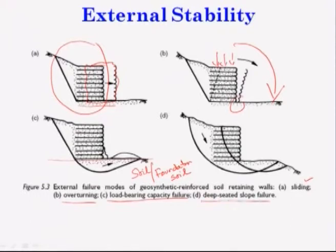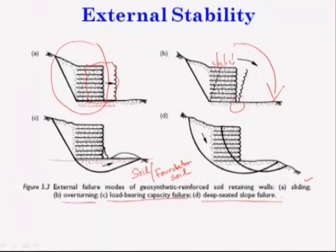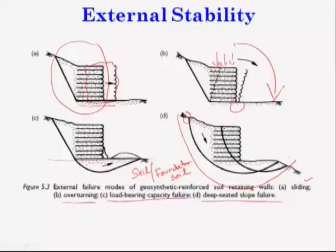Then there is deep seated slope failure. If there are loose fill materials present, the failure surface may occur deep-seated — it will start from the reinforcing mass, go beyond, and cross over the foundation soil. To summarize, external failure modes of geosynthetic reinforced soil retaining walls are: first sliding, second overturning, third load bearing capacity, and fourth deep seated slope failure.